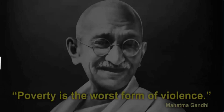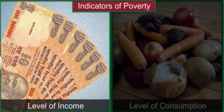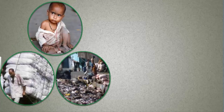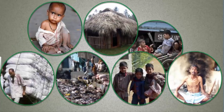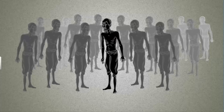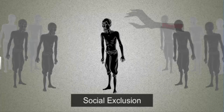Social scientists use different types of indicators to understand poverty. The most commonly used indicators relate to the levels of income of people and their consumption of goods. Now poverty is also observed using other social indicators like lack of education, health care, sanitation and safe drinking water.